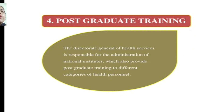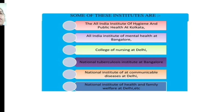The next function is post-graduate training. The Directorate General of Health Services is responsible for the administration of the national institutes, which also provide post-graduate training to different categories of health personnel. Some of these institutes are: the All India Institute of Hygiene and Public Health at Kolkata, All India Institute of Mental Health at Bangalore, College of Nursing at Delhi, National Tuberculosis Institute at Bangalore, National Institute of Communicable Disease at Delhi, and National Institute of Health and Family Welfare at Delhi, etc.